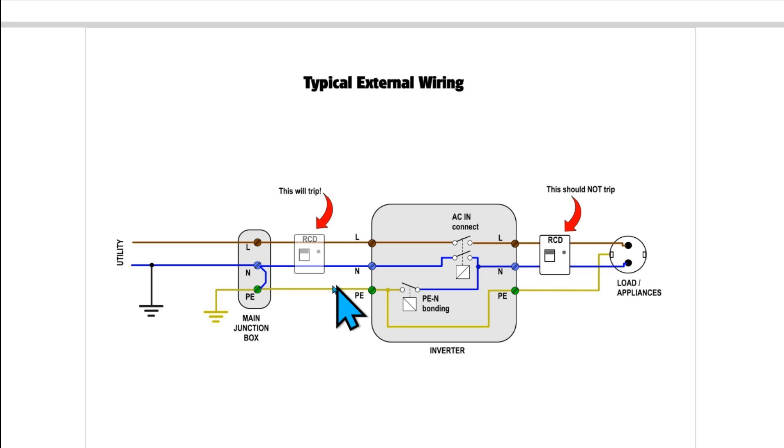This because the neutral and the PE are not at the same voltage even though they are connected here at the main junction box. In particular if you have long wires from here to here and particularly if there are some loads here, the voltage drop on the wires would be sufficient to make this RCD trip because there will be a certain current that would flow through the earth in this way.